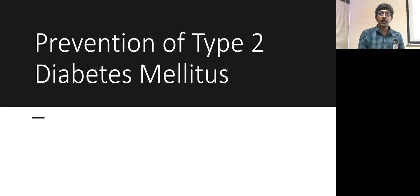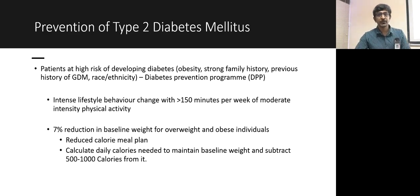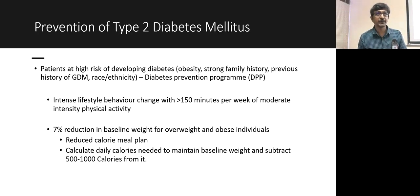For people at high risk of developing diabetes — such as those with obesity, strong family history, previous gestational diabetes, or living in high-risk areas — preventive strategies include the Diabetes Prevention Program, which requires at least 150 minutes of moderate-intensity physical activity per week. For overweight or obese patients, target a 7% reduction in weight through a reduced-calorie meal plan — subtract 500 to 1000 calories from daily intake depending on BMI.